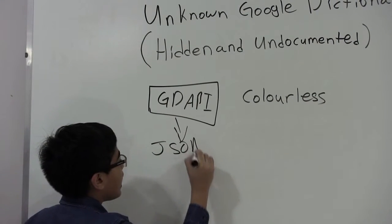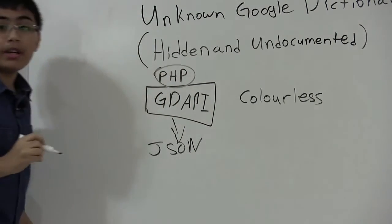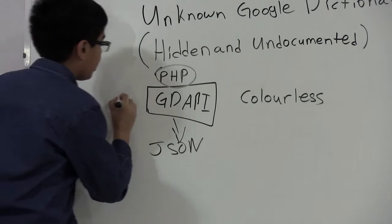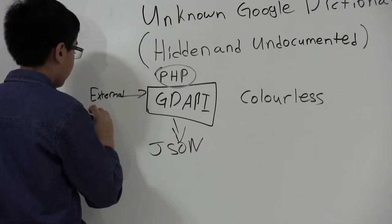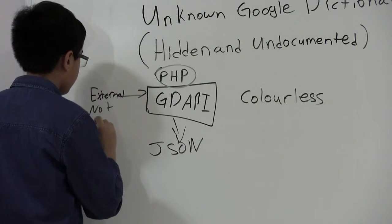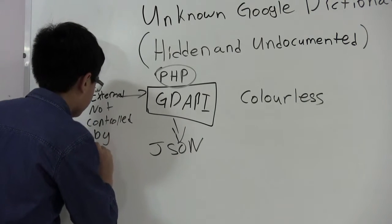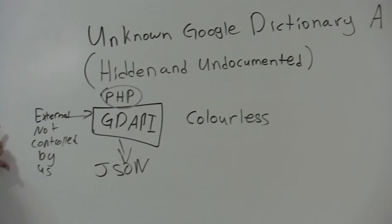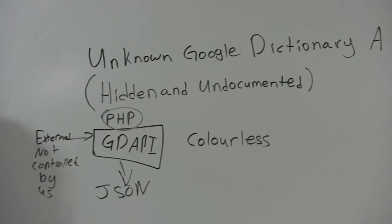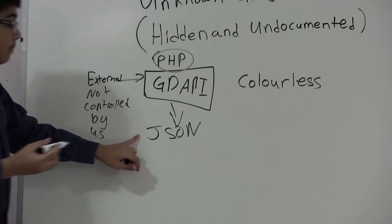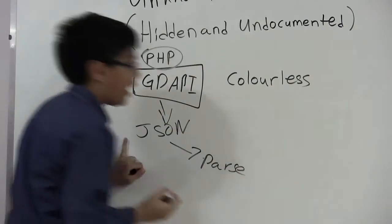The API result comes back as JSON, and by the way this is also PHP-based on the backend. This is an external API not controlled by us, so we can't really customize it at all. But Google gives you enough information in their API anyway.